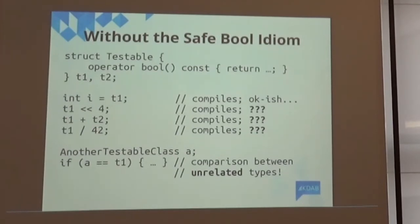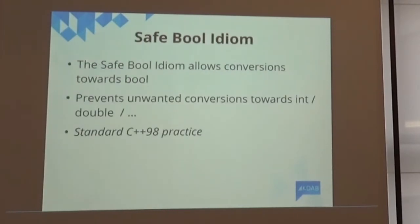And also, I totally violate type safety, because if I also get another testable data type, now I can compare the two, because they can both convert to bool, and they can get equal operator between bool. That makes totally no sense, so we do use the safe bool idiom all over the place. It's standard practice in C++ 98.